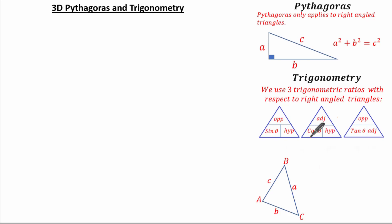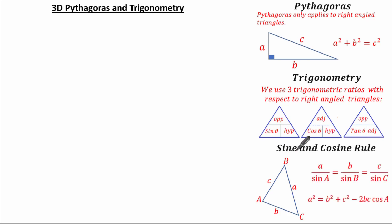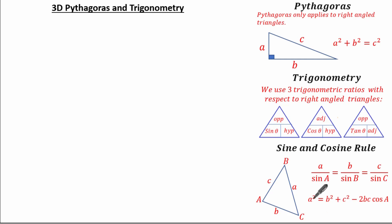It's always helpful to know the sine and cosine rule. Remember the sine and cosine rule applies to any type of triangle, where a over sin A equals b over sin B equals c over sin C. The cosine rule states a squared equals b squared plus c squared minus 2bc cos A.